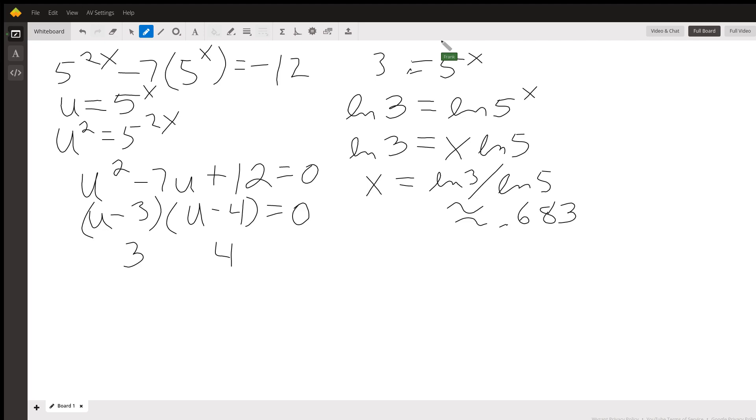And for the other one, it's going to be 4 equals 5 to the x power. So by the same process, it will be x equals log of 4 divided by log of 5.